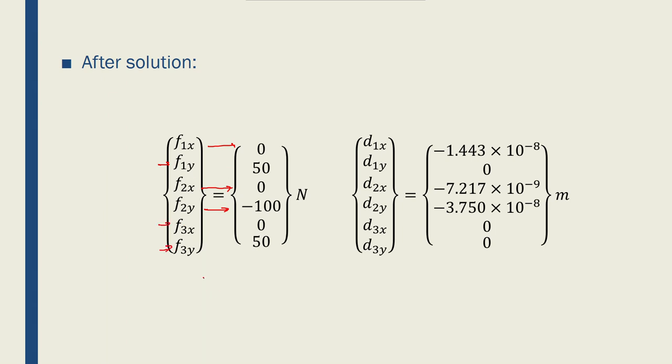What I didn't know was f1y and f3y and f3x. And f2y, if you look, is minus 100. And if I sum f3y and f1y, so f1y plus f3y is equal to 50 plus 50 is equal to 100, which is what we expect from equilibrium through statics that we studied in mechanical engineering. So that is true.